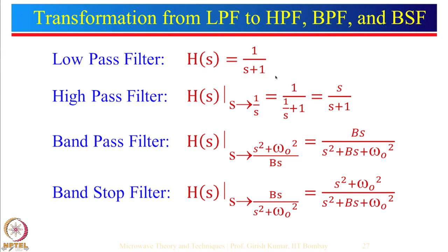We had also seen that instead of realizing these filters using lumped elements like inductors and capacitors, we can also use microstrip lines. We had earlier seen a small transmission line of length less than lambda by 4 — if it is shorted it realizes an inductor, and if it is open circuited it realizes a capacitor. We had used that concept to design a low pass filter. Now let us look into how we can do the transformation from low pass filter to high pass, band pass, or band stop filter.